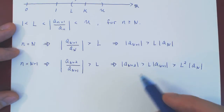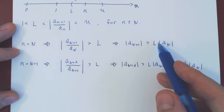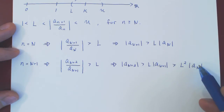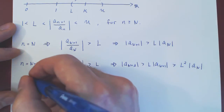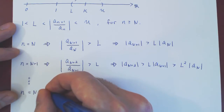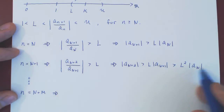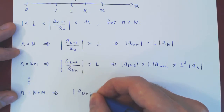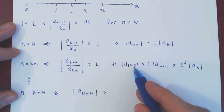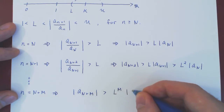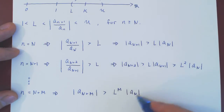You can keep going like this. You see what's going to happen: |a_{N+1}| > L · |a_N|, |a_{N+2}| > L² · |a_N|. So if we keep going M steps, with n = N + M, by the same reasoning we will have that |a_{N+M}| > L^M · |a_N|.